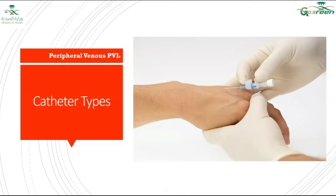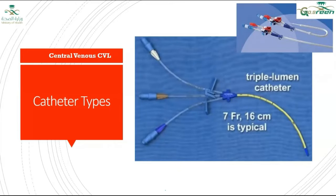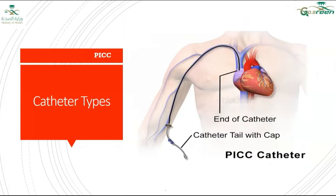The peripheral line is inserted in peripheral veins by any cannula. The central line itself — as you can see here — this is a triple lumen catheter, 7 French, 16 centimeters. The PICC line — peripherally inserted central catheter — is commonly used nowadays. You can see it inserted in the forearm, in the basilic or cephalic veins under ultrasound, with the tip reaching near the heart. So it is considered central, but peripherally inserted.